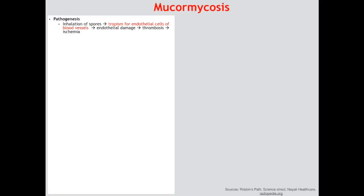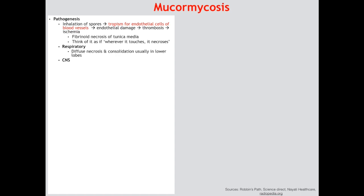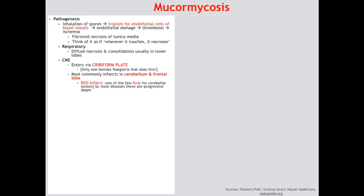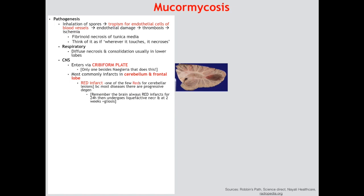The pathogenesis starts with inhalation of the spores, after which it invades the endothelial cells of our blood vessels leading to thrombosis and ischemia — wherever it touches, it necrotizes. This can occur in the lung leading to diffuse necrosis and consolidation usually in the lower lobes. However the more common presentation is CNS. Mucor can gain access to the CNS via the cribriform plate — the only other pathogen that can do this is Naegleria fowleri. Mucor most commonly infarcts the cerebellum and the frontal lobes, causing a red infarct. It can also cause cavernous sinus thrombosis.